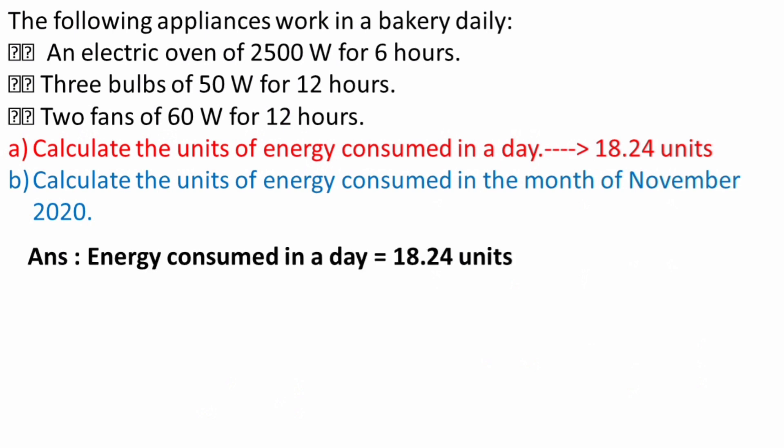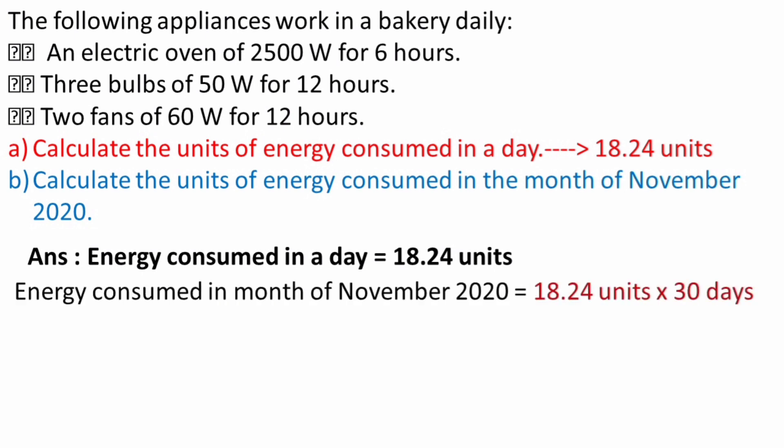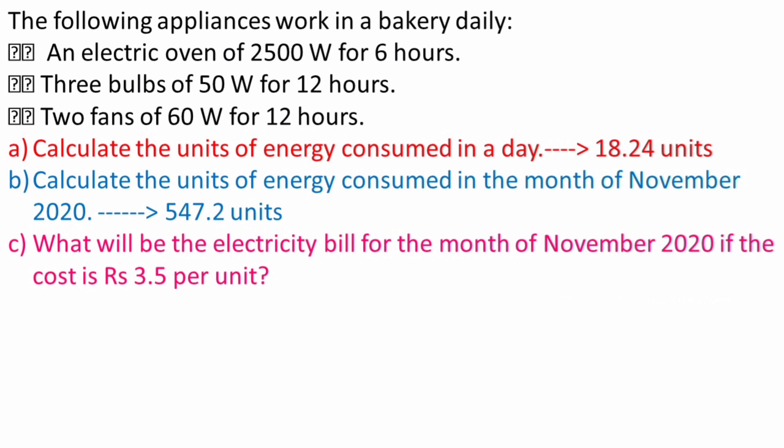For the month of November, we know there are 30 days. So if 1 day consumes 18.24 units, in the month of November it will be 18.24 × 30 = 547.2 units. So the energy consumed in the month of November is 547.2 units.